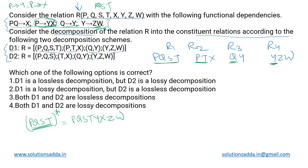Checking R1 and R2, the common attribute is PT, and PT forms the candidate key in R2. Hence the decomposition of R into R1 and R2 is lossless. These two can be merged together going backwards to form a new relation R5 with attributes P, Q, S, T, and X.